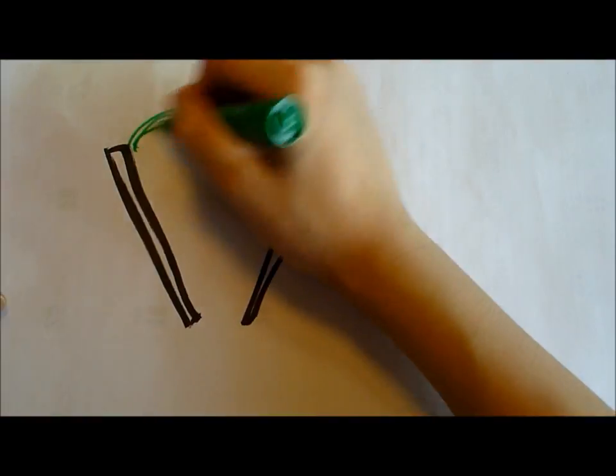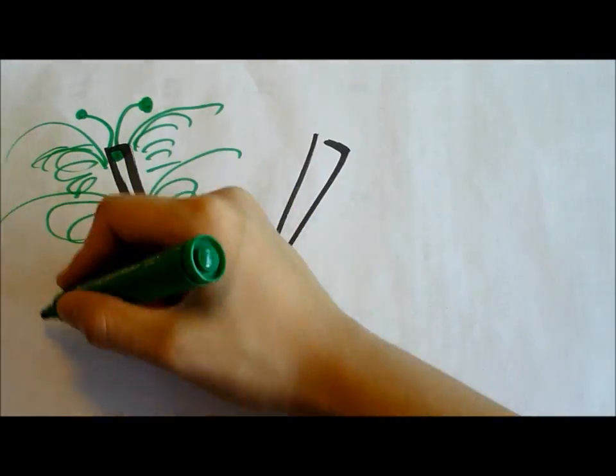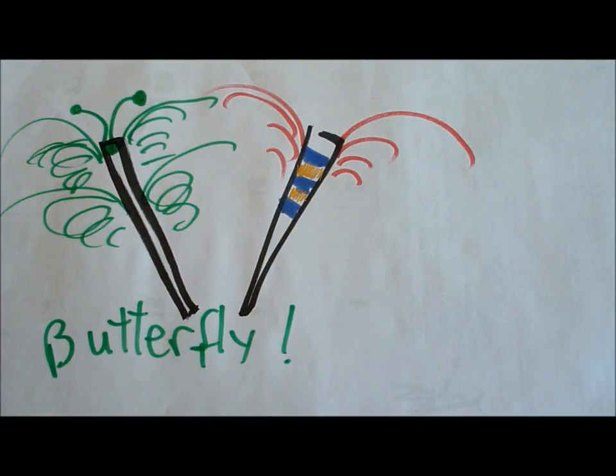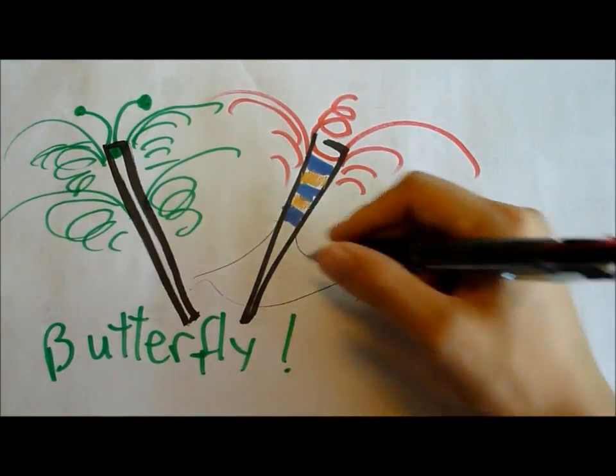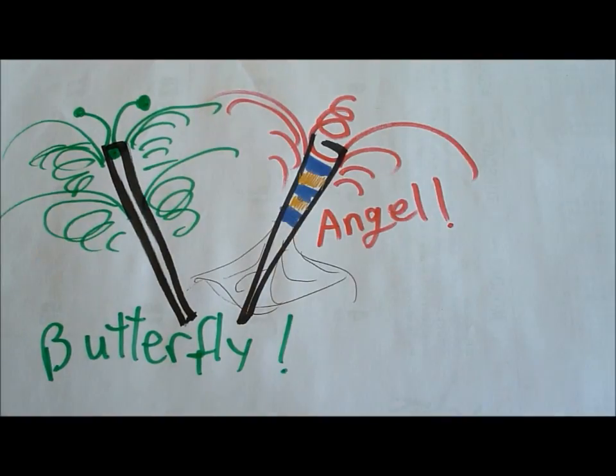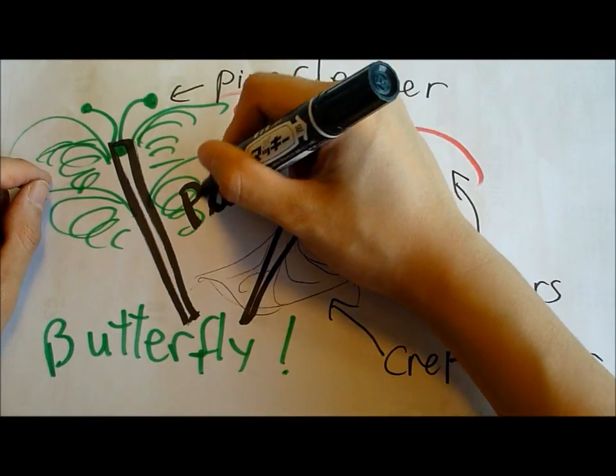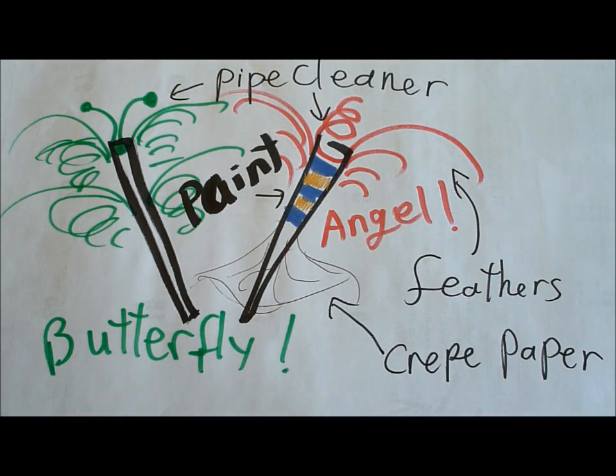These are chopsticks. Wow, a chopstick has become a butterfly. Through decoration, the other chopstick has become an angel using pipe cleaners, feathers, crepe paper, and paint. Isn't it beautiful?